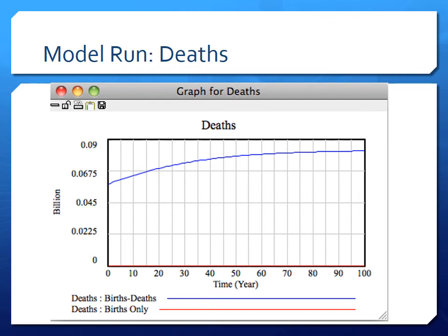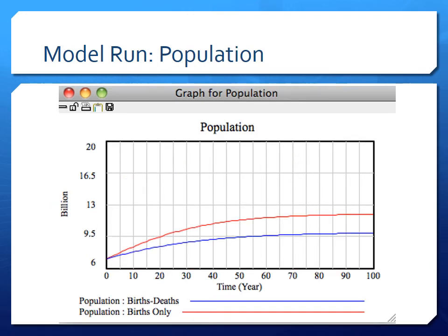The deaths are going up because population continues to grow, so there's a larger pool of people available to die given the mortality rate. Comparing the two models: in the births-only red model, population grew from 7 to 12 billion reaching capacity. In the births-and-deaths blue model, the system also starts at seven but tapers off below capacity — stabilizing at around 9.5 to 10 billion instead of 12 billion.